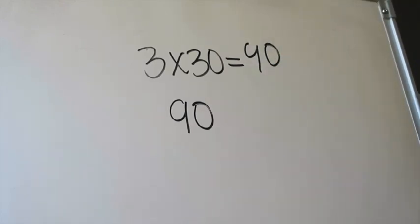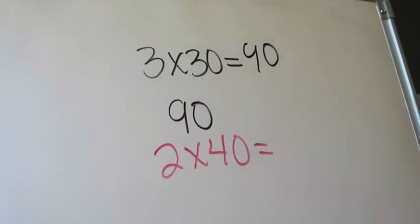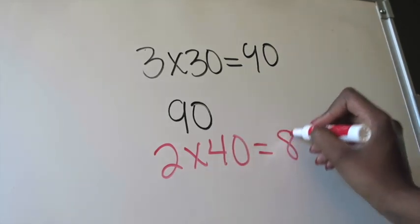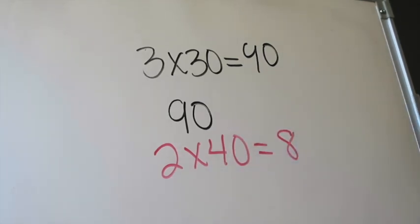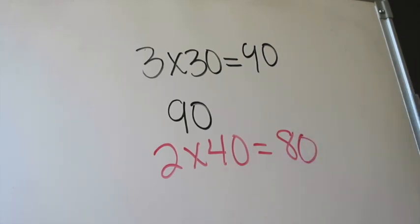Let's do another one. This time, let's look at 2 times 40. Again, you're going to ignore that zero. You're going to multiply 2 times 4, which is going to be eight. Ask yourself, were there any lonely zeros left over? There was. Tack that on to the end. You know that 2 times 40 is going to be eighty.